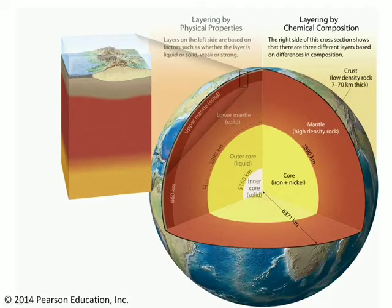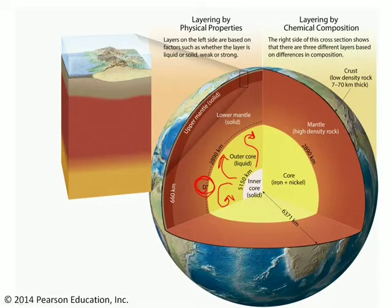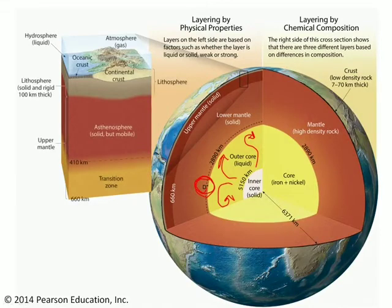On the other hand, we might opt to focus on physical properties. In this case, we actually need to divide the core up into an inner core, which is solid, and an outer core, which is liquid. Above the outer core is the D double prime layer, which is basically a partially molten layer at the base of the mantle. Then the lower mantle, which is solid, and the upper mantle, which is still solid.